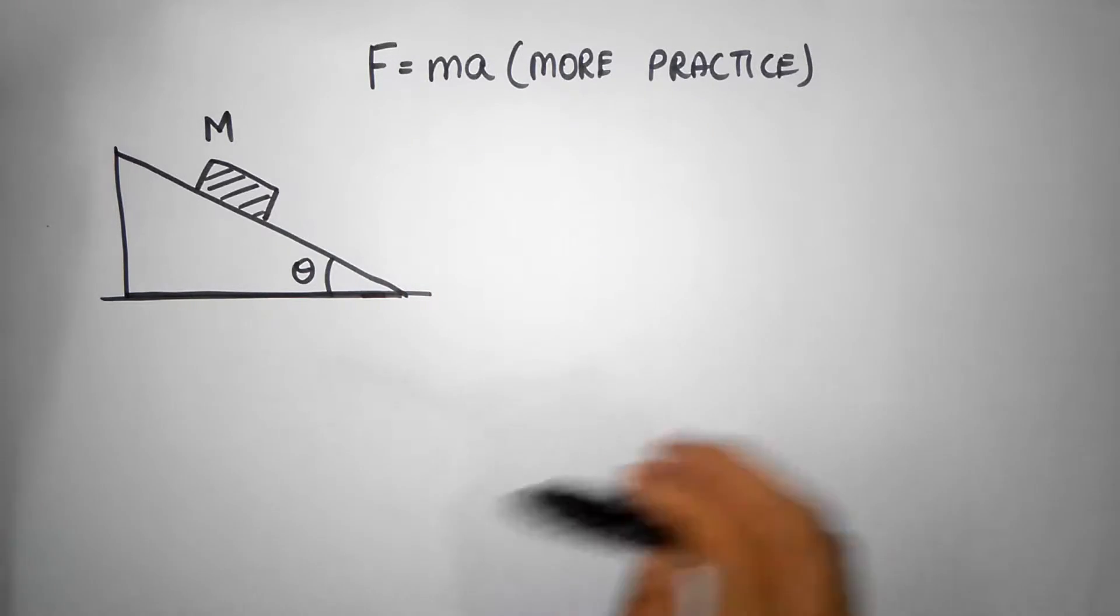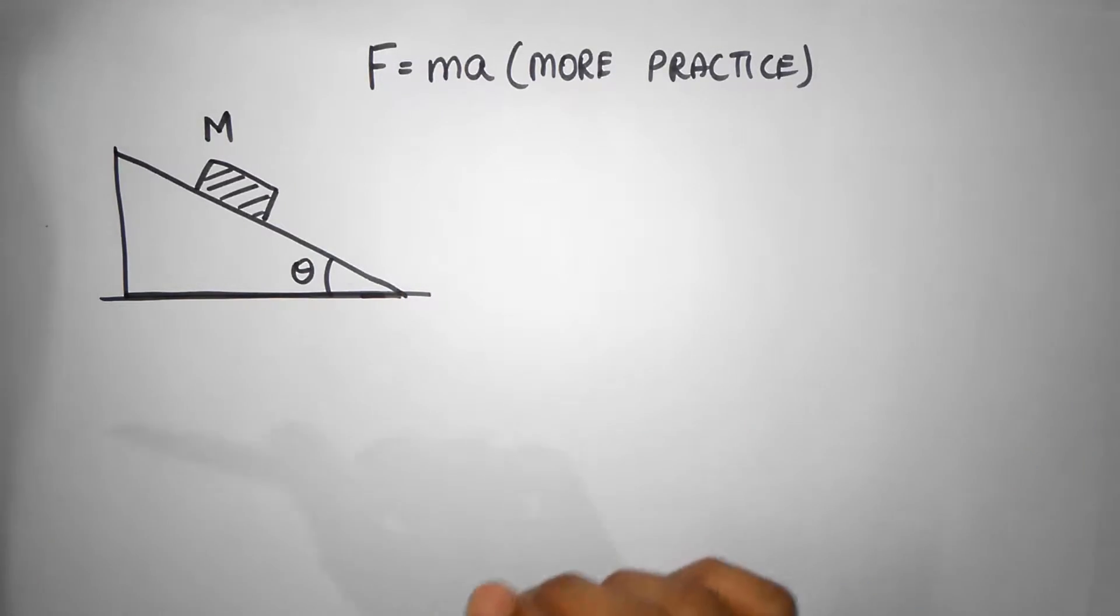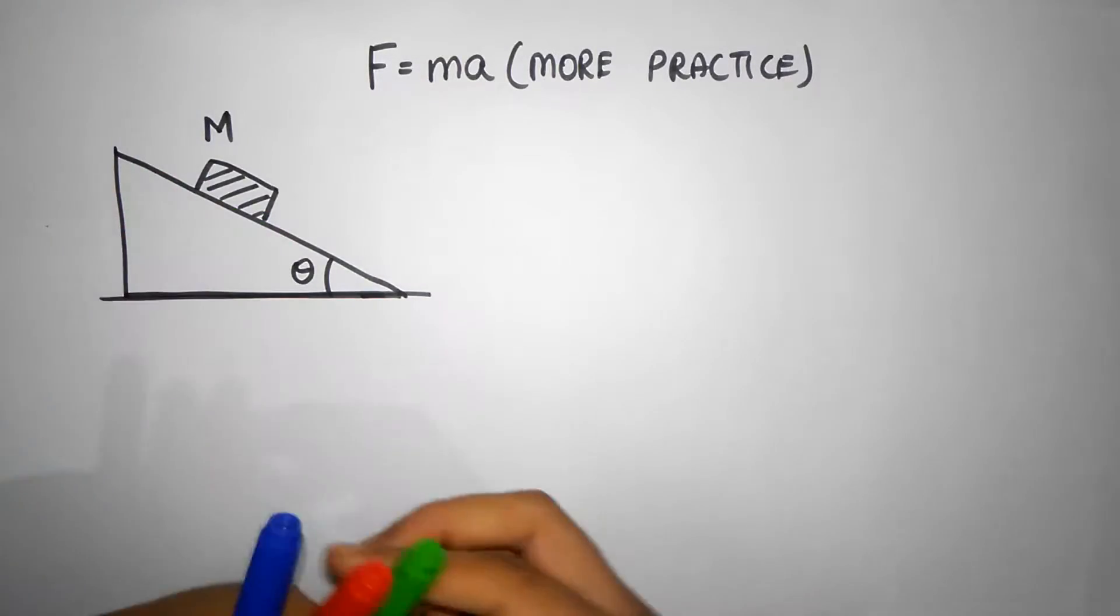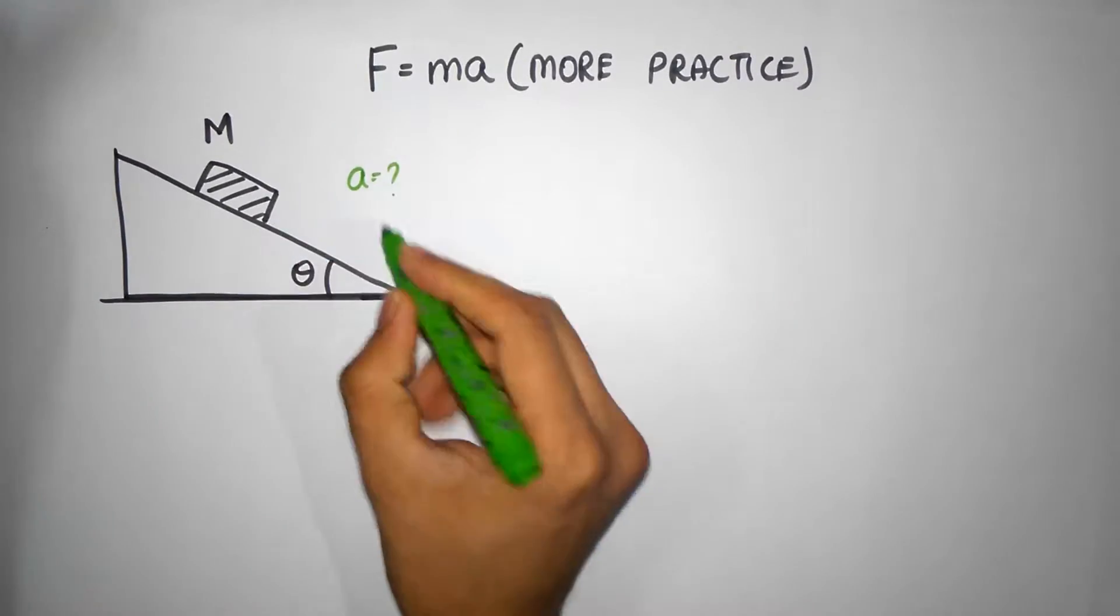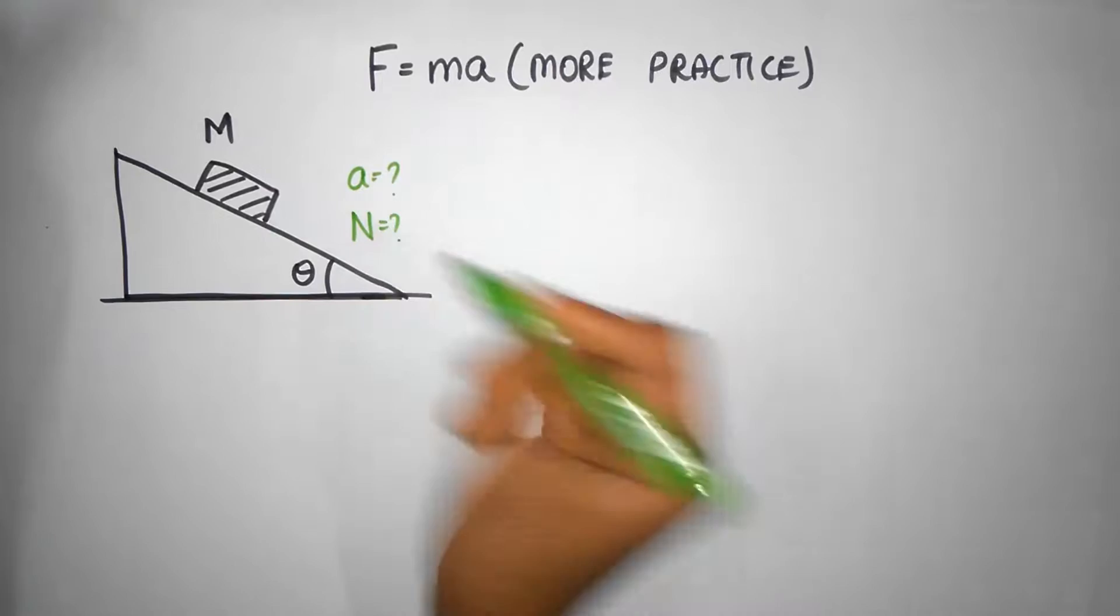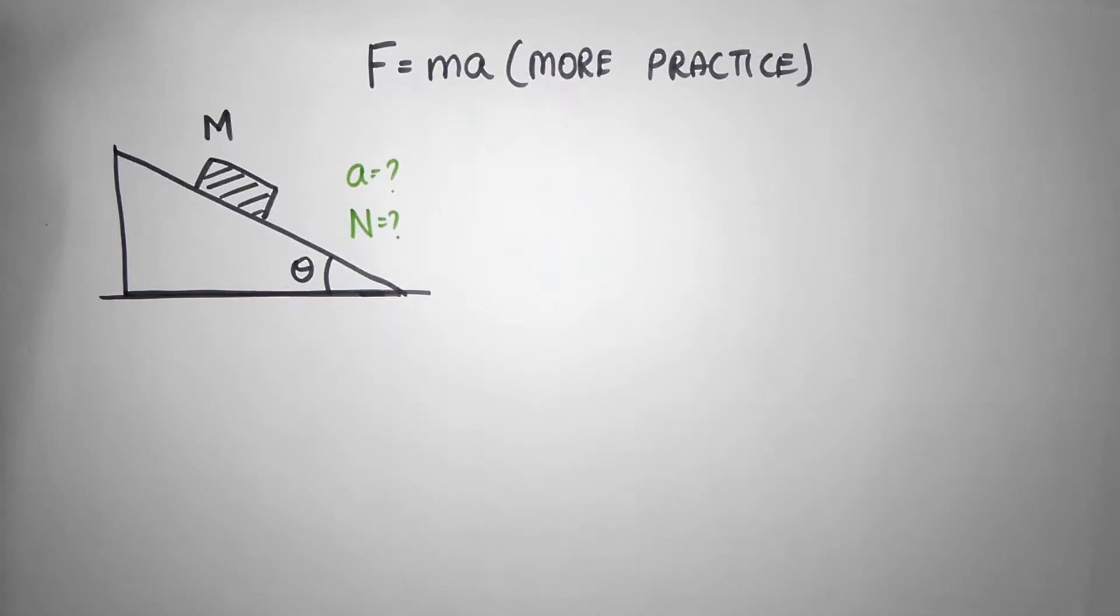It's a pretty straightforward problem, but let's apply F = ma to figure it out. I also want to know what the normal force is. So these are two questions: I want to know what the acceleration is and I want to calculate the normal force. So we'll draw a free body diagram for that particular mass.